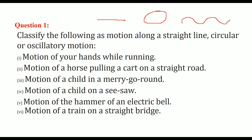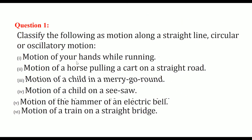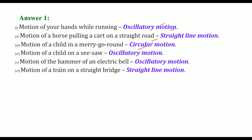Motion of your hand is oscillatory. Motion of a horse pulling a cart on a straight road is straight line motion. Motion of a child in a merry-go-round is circular. Motion of a child on a seesaw is oscillatory. Motion of the hammer of an electric bell is oscillatory motion. And motion of a train on a straight bridge is straight line motion.